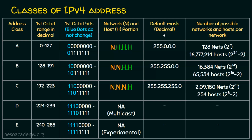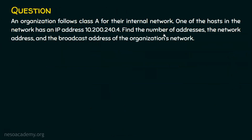Let's understand this better with an example. The question is: an organization follows class A for their internal network. One of the hosts in the network has an IP address 10.200.240.4. Find the number of addresses, the network address, and the broadcast address of the organization's network. The network address is the first address of the class A network, and the broadcast address is the last address of the network.